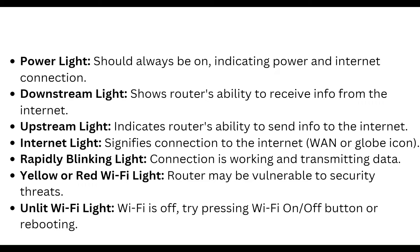The upstream light indicates the router's ability to send information to the internet. The internet light signifies the connection to the internet when the global icon is lit.